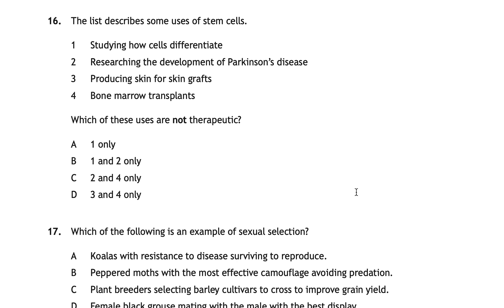For question sixteen, stem cell uses listed are: one — studying how cells differentiate; two — researching the development of Parkinson's disease; three — producing skin for skin grafts; four — bone marrow transplants. The question asks which are not therapeutic. The correct answer is B — one and two only. Studying cell differentiation and researching Parkinson's disease are research uses, not therapeutic. Three and four are therapeutic uses — therapeutic relates to healing and curing disease, so skin grafts and bone marrow transplants are examples of these.